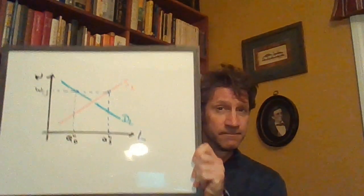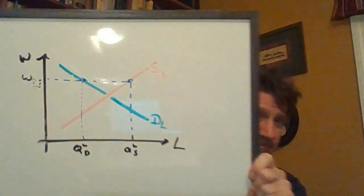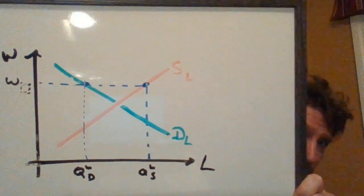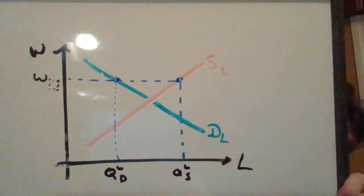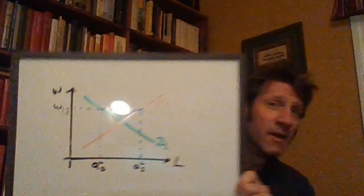I'll invite you to get a pencil and take this down. This is the model. Now that you can see it, feel free to go back and pause and take it down. You'll notice the axes are W and L — it's the labor market.